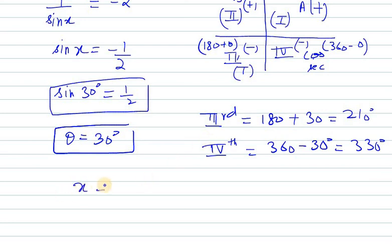x is 210 and to convert it into radian we need to multiply the number with pi over 180. So the value is 7 pi over 6.